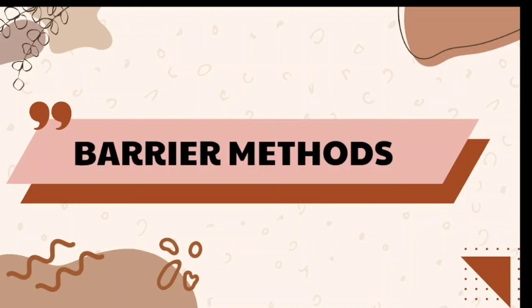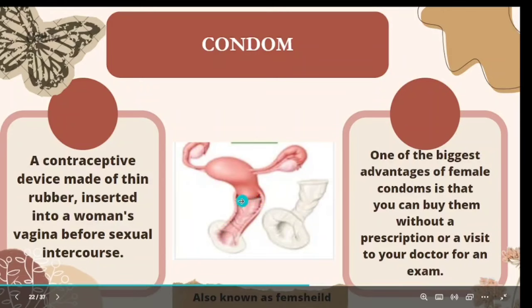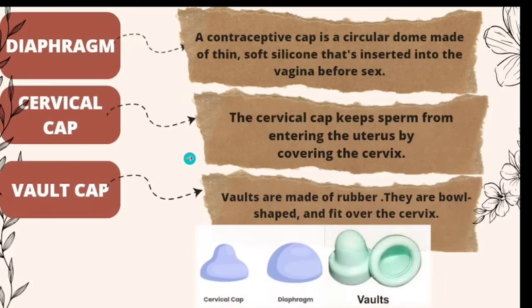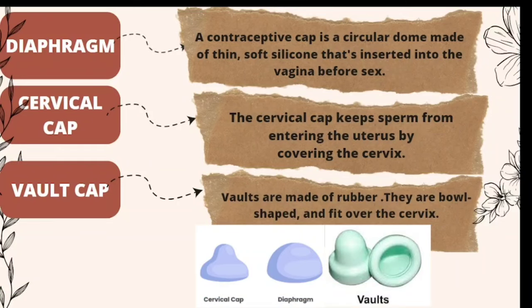The next method is the barrier method, which prevents the meeting of ovum and sperm. It includes mechanical barriers: condoms — contraceptive devices made of thin rubber inserted into the vagina before intercourse; the diaphragm — circular and dome-shaped, made of silicone, inserted into the vagina before sex; the cervical cap — which covers the cervix to keep sperm from entering the uterus; and vault caps — bowl-shaped rubber devices that fit over the cervix. Chemical barriers called spermicides, such as nonoxynol-9 and octoxynol-3, destroy sperm when applied in the female genital tract.